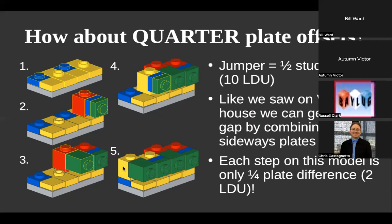Using all four combinations — headlight brick with or without jumper plate, and regular SNOT brick with or without jumper plate — gives you four different depths. The first yellow headlight brick edge is in line with the gray plate. The second, with a jumper plate, sticks out by 2 LDU — a quarter of a plate. The next, a red brick with a stud on the side, gives half a plate difference. The last gives another half-plate difference. That adds up to four steps to reach a full plate height difference. By repeating this pattern, you can make any slope that goes up by a quarter plate each time.